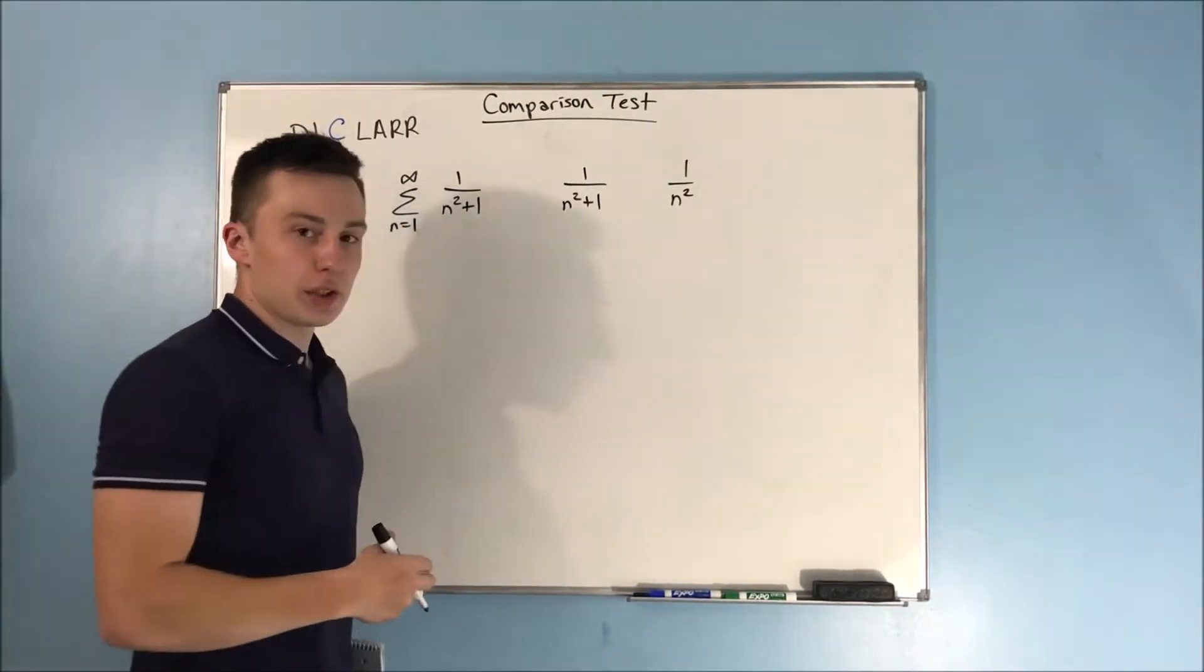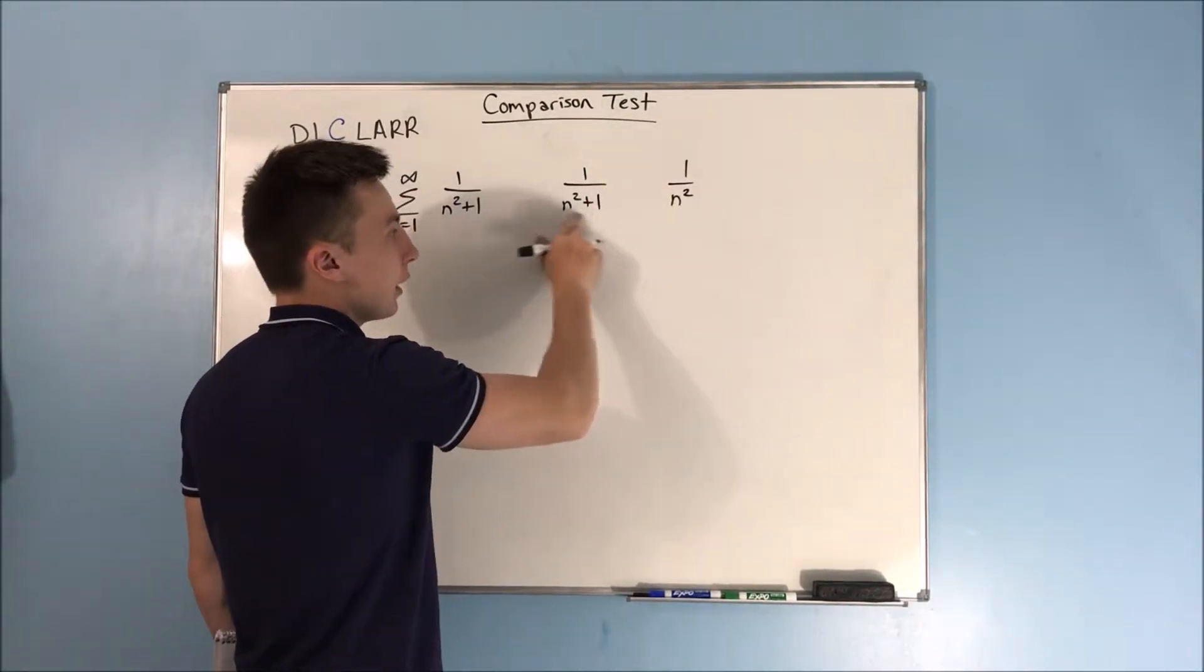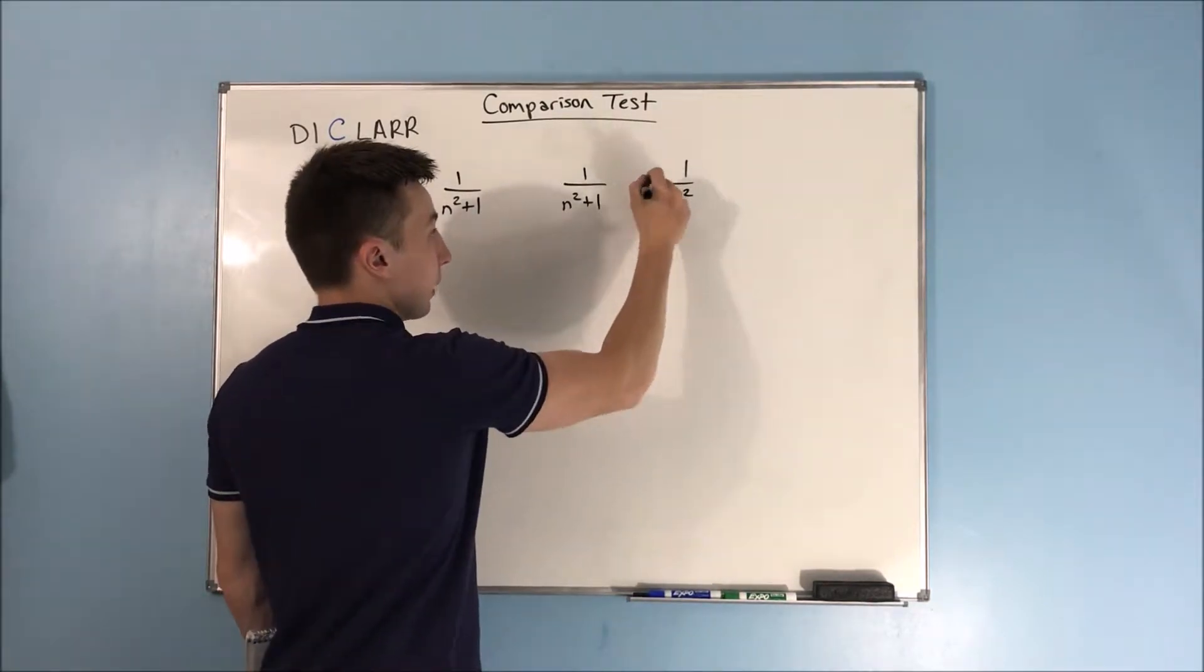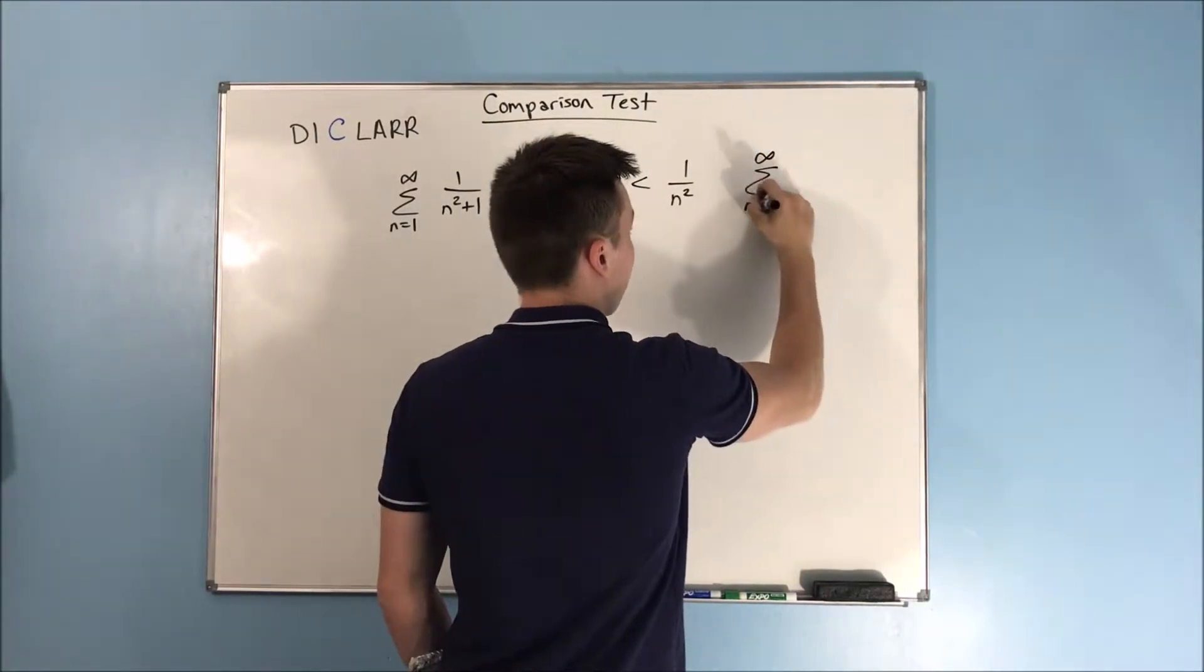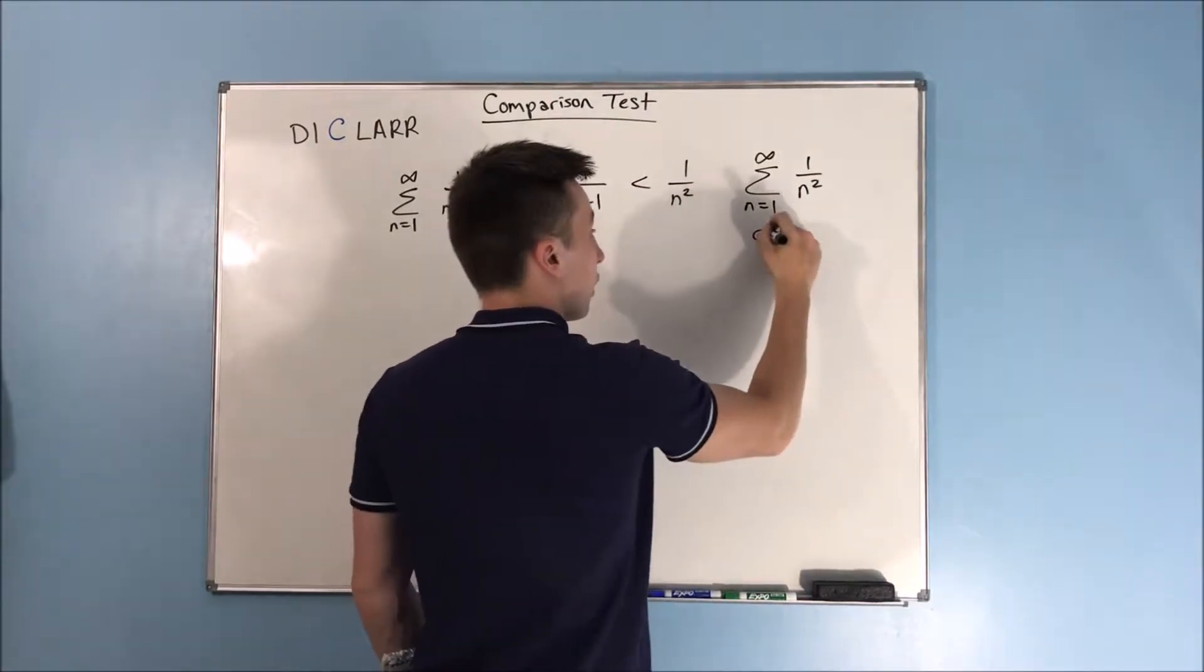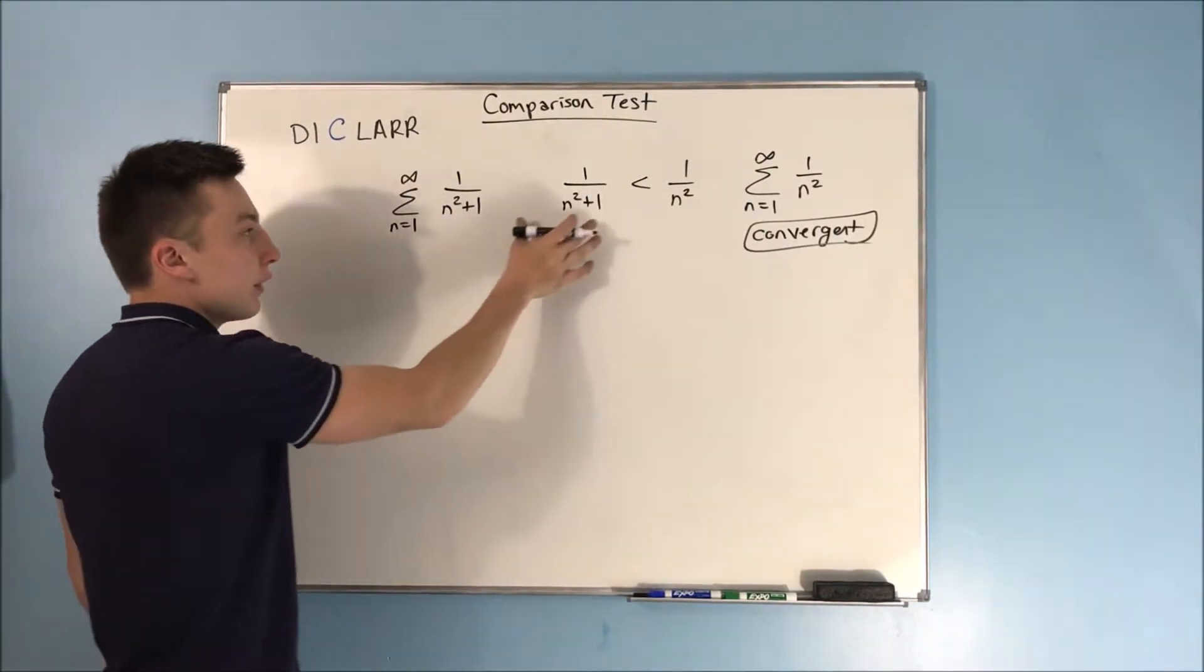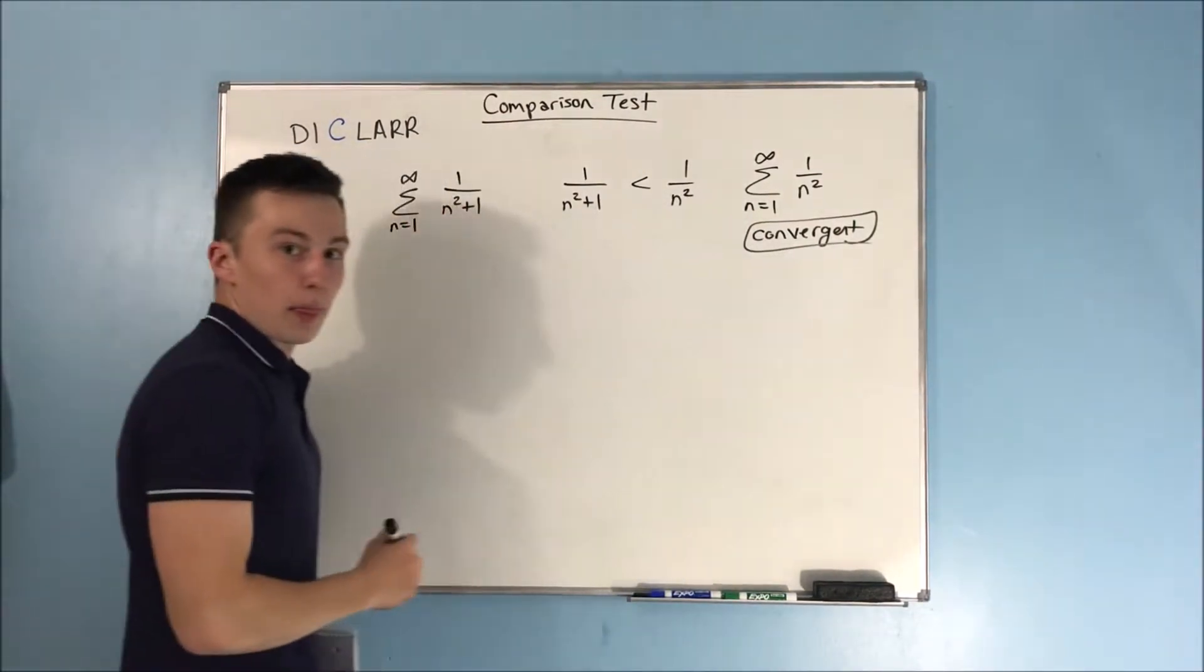Now, what's the relationship between these two? Well, since you have a plus 1 here, the denominator here at least is always going to be bigger than this one, which means overall this fraction will always be smaller than this one. So this will always be bigger. So we know that the sum from n equals 1 to infinity of 1 over n squared is convergent, and since that is greater than something that we don't know about, this series is less than a series that we know is convergent.